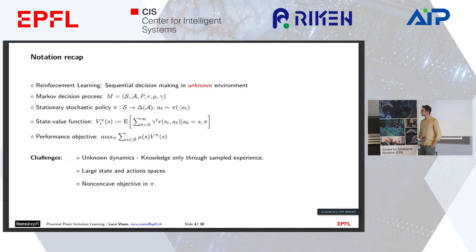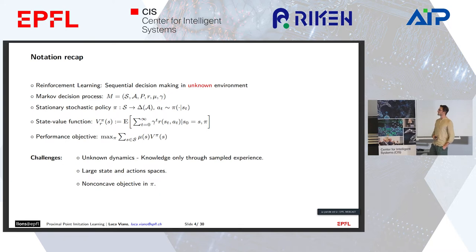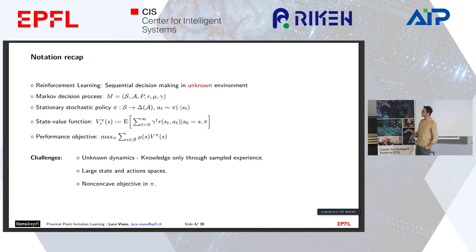When we talk about stationary stochastic policy, we mean a mapping from state to probability distribution over actions. The state value function v is the expectation of the discounted sum of rewards. The performance objective is maximizing over the policy space the expectation over the initial distribution of the state value function.